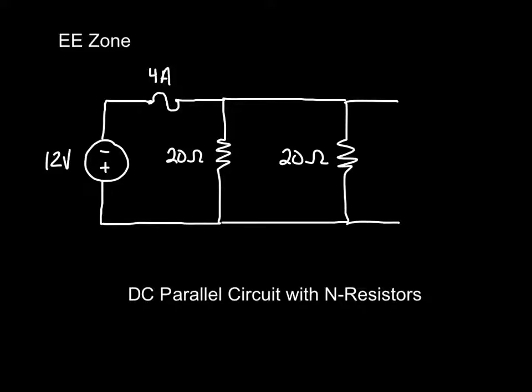Hello, my name is Trey. I'll be uploading to the EE zone a problem dealing with a DC parallel circuit with N resistors. We say N resistors because N represents the number of parallel resistors we can have before our 4 amp rated fuse pops. So let's get started with this problem.